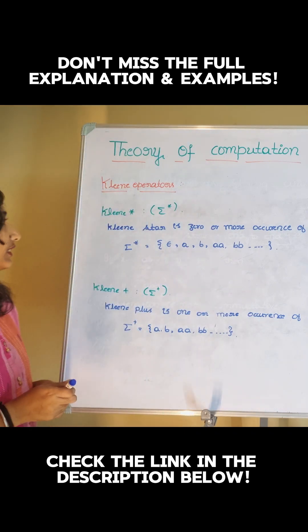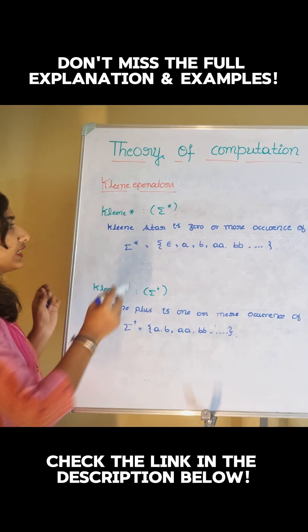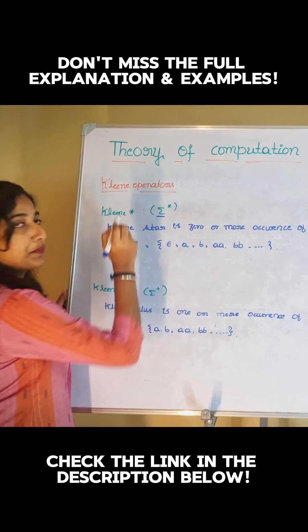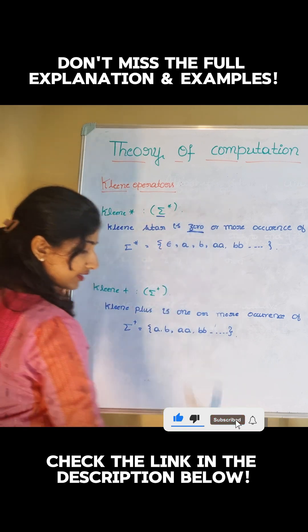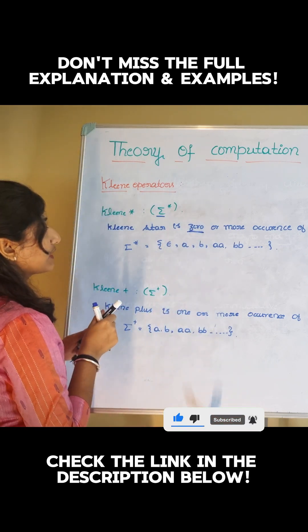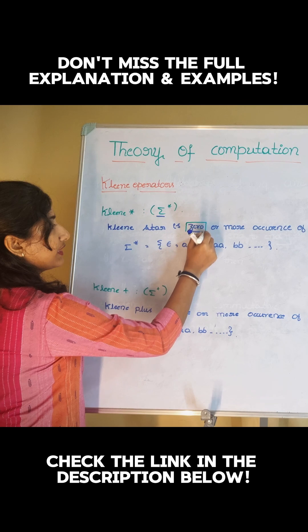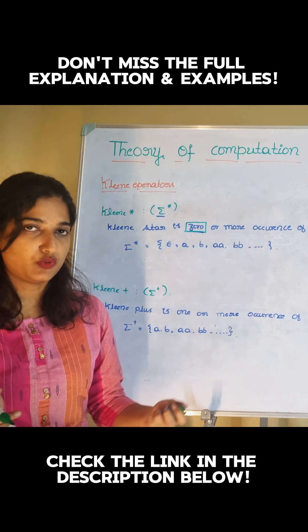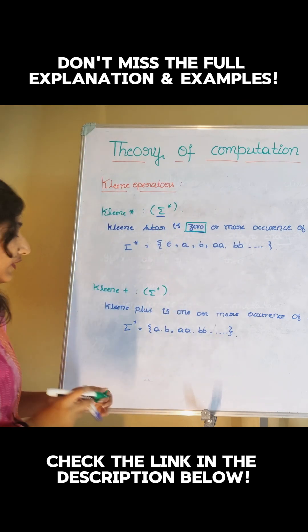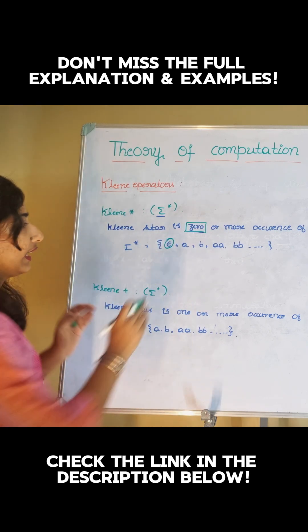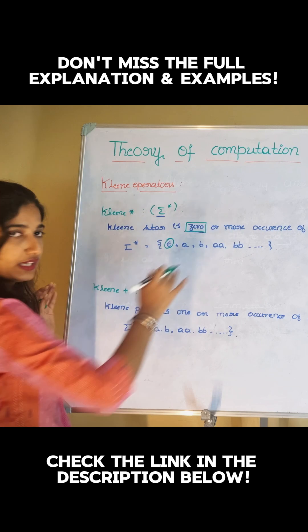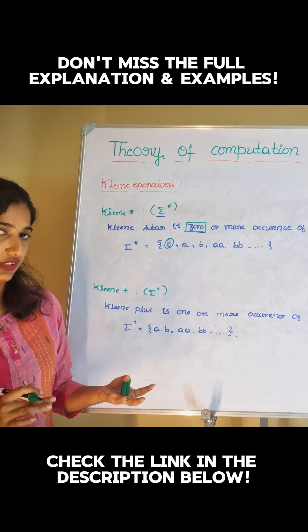First, we have clean star, represented by sigma to the power star. Clean star is zero or more occurrences of a string. Remember, clean star is zero or more occurrence of a string, which means we can have epsilon, and also a, b, aa, bb, and so on in the clean star.